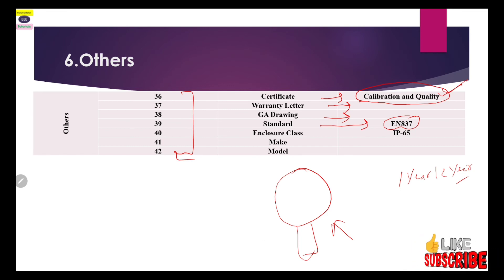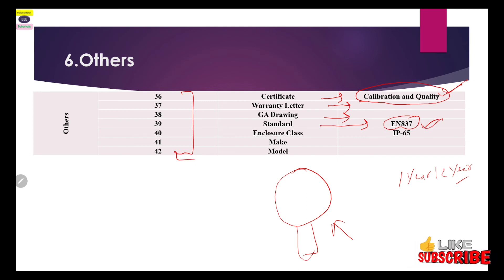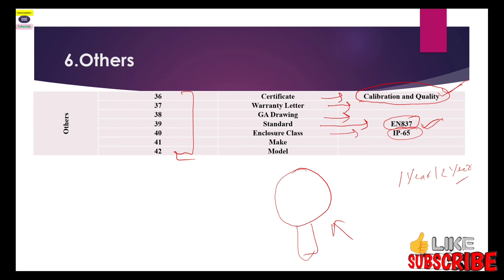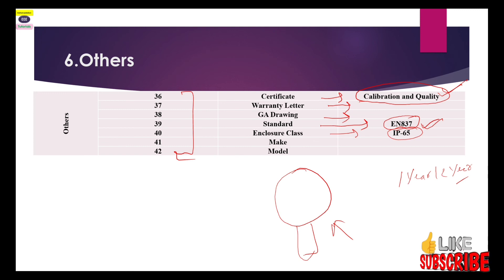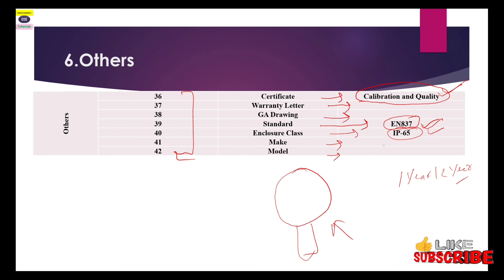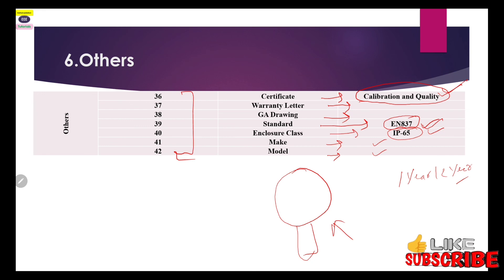Some standards apply to pressure gauges — for example, EN837, which is used for selection of pressure gauges. Your vendor should follow these standards while constructing the gauge. Enclosure class IP65 — you should specify what ingress protection you want, since gauges are generally installed in open spaces where water or dust may enter. Finally, if purchasing from a specific vendor, write down the make and model number.